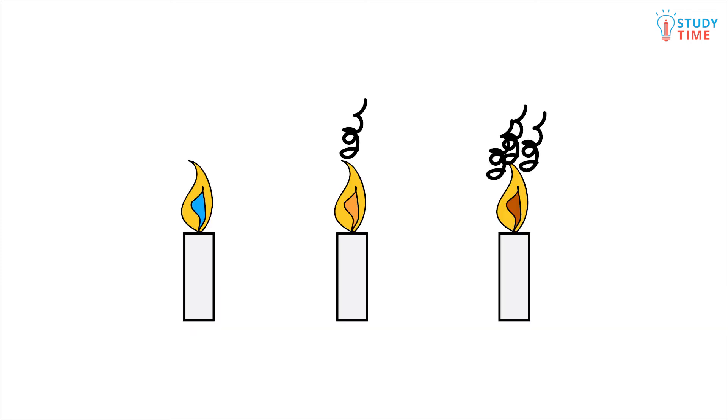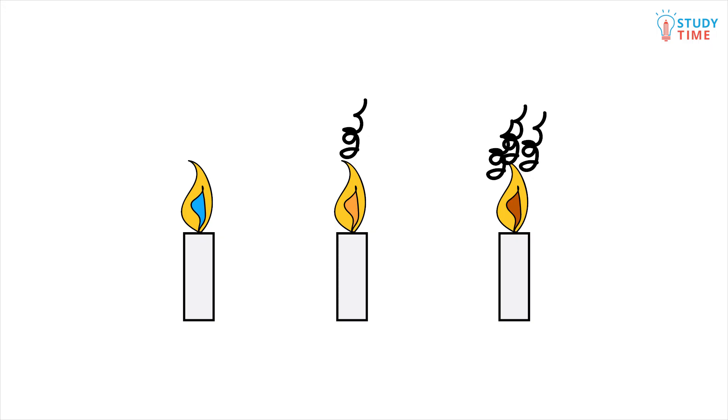An even simpler test is to burn a sample of each organic compound. Remember the difference between complete and incomplete combustion? Due to the chemical difference between alkanes, alkenes and alkynes, alkanes burn with the cleanest flame, as in they have the most complete combustion. And alkynes burn with the sootiest flame, they have the most incomplete combustion, with alkenes falling in between. Another handy way of figuring out which chemical is which.